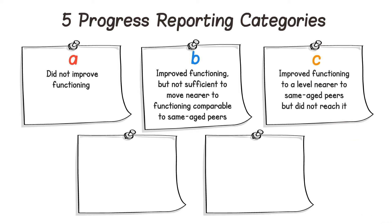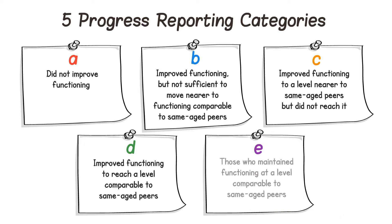C. Improved functioning to a level near to same-age peers but did not reach it, D. Improved functioning to reach a level comparable to same-age peers, And E. Those who maintained functioning at a level comparable to same-age peers.